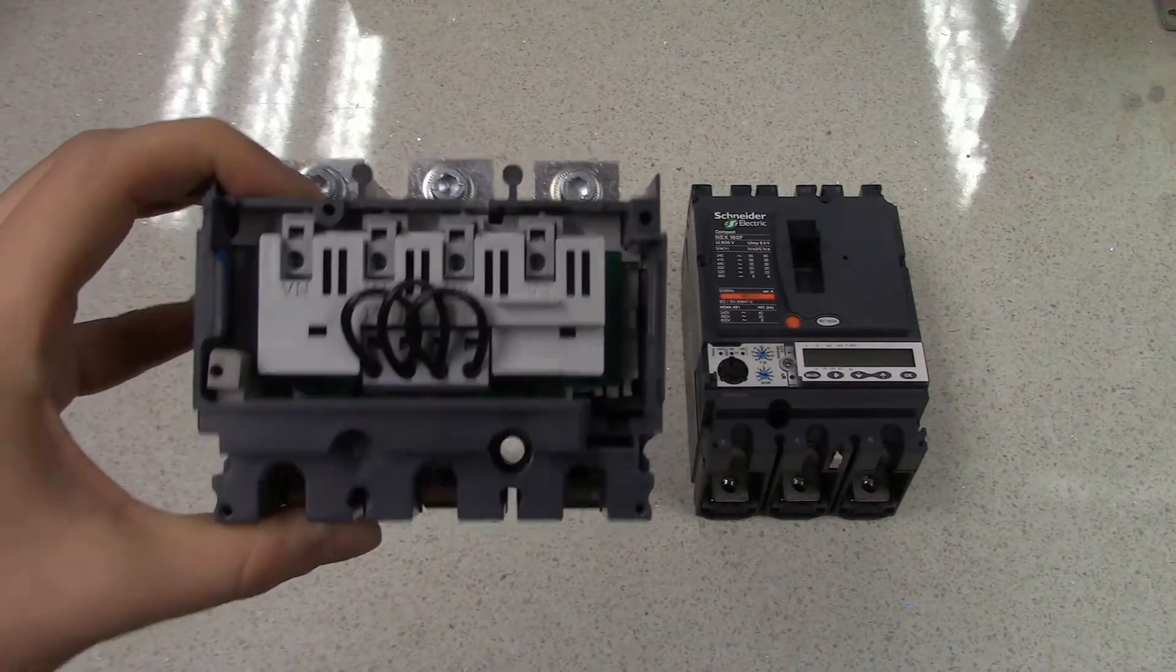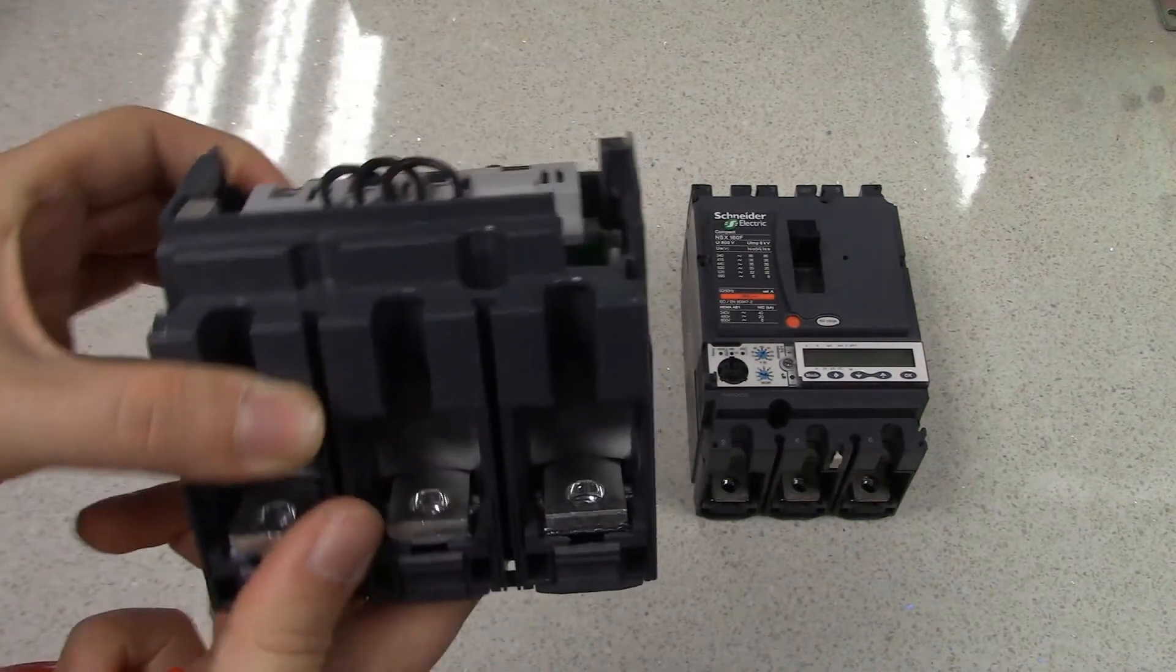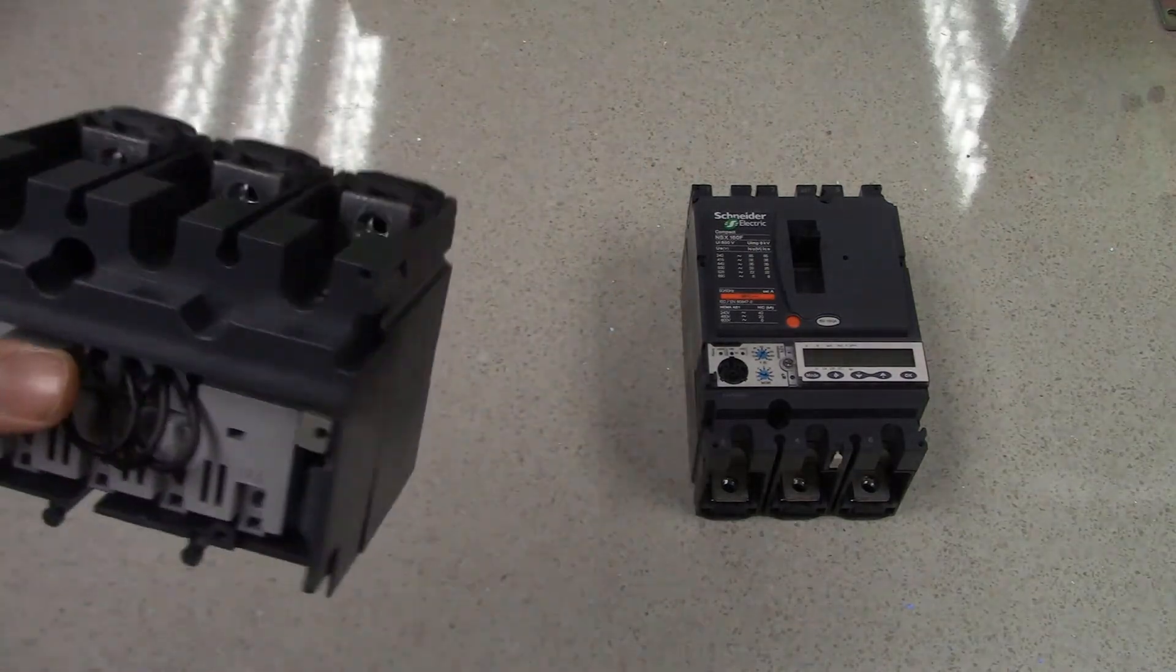Now we've removed the cover, what we're going to do is take off the M6 snapping nuts from the CT block and change them over for the M8 snapping nuts on the breaker.